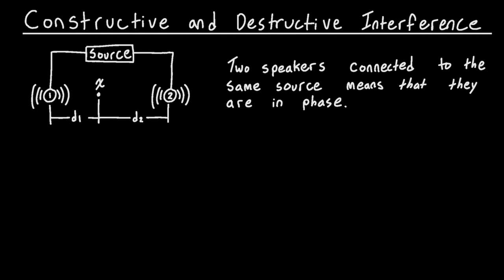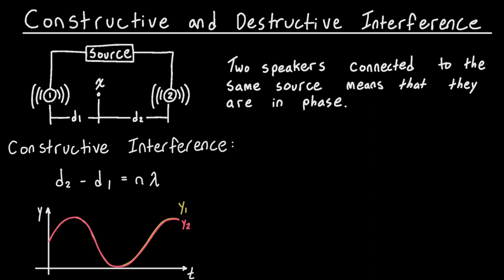We've labeled on our diagram D1 and D2. D1 is the distance between the person and speaker number one, and D2 is the distance between the person and speaker number two. For constructive interference we use the equation D2 minus D1 equals n times lambda, where n is any integer. This means if the difference between the two distances equals some multiple of the wavelength, we get constructive interference — those two waves have lined up perfectly so they add together.